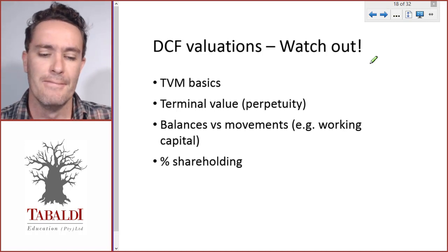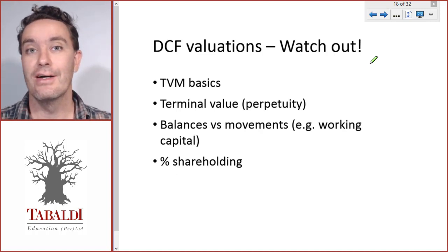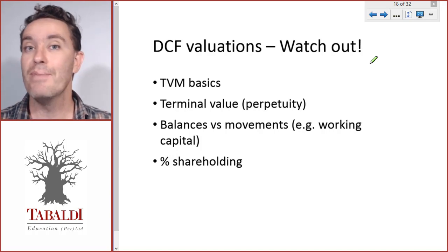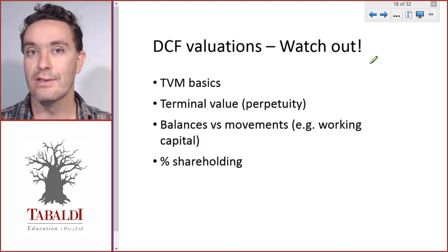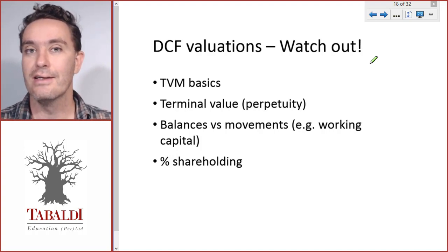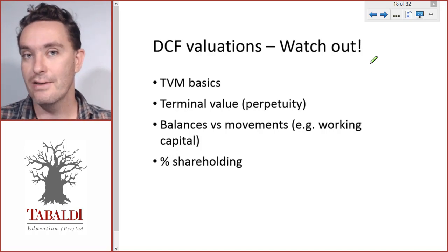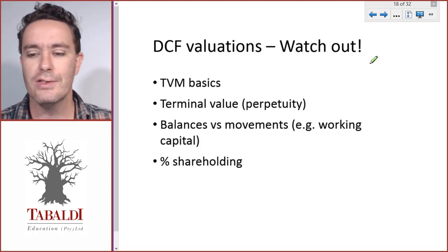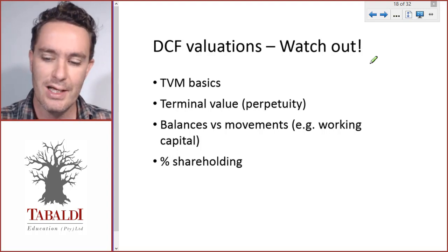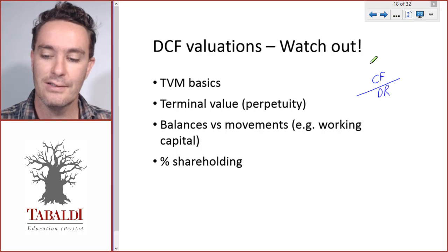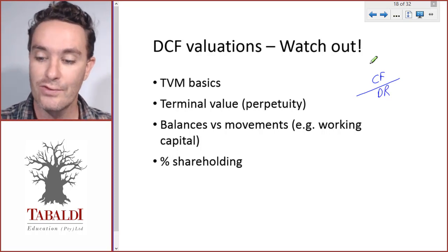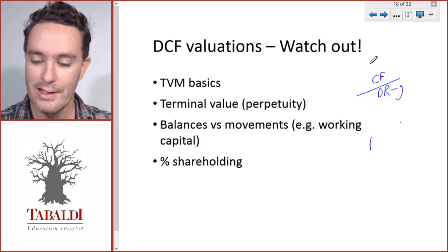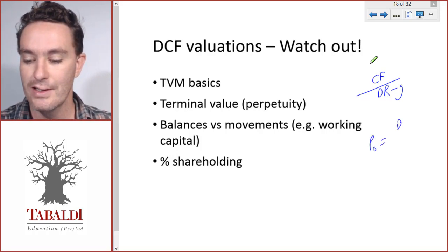The first thing is time value of money basics. When we calculate the present value of operations, we usually have a planning period and then a perpetuity thereafter. The final year's cash flow will grow at a constant growth rate forever. Remember, the value of a perpetuity is the cash flow divided by the discount rate, and if the cash flow grows at a constant rate, we deduct the growth rate — so it's cash flow divided by (discount rate minus g). This is similar to the present value of a share: dividend divided by ke minus g.